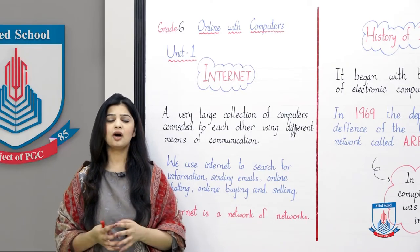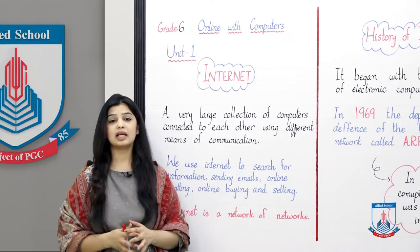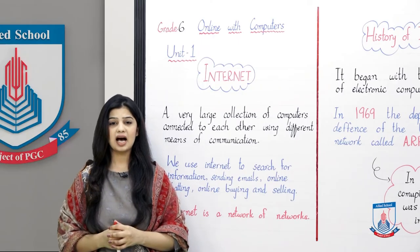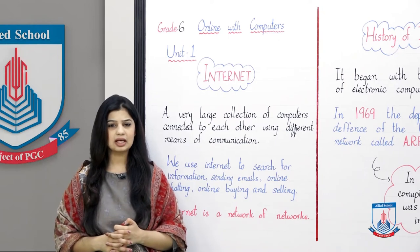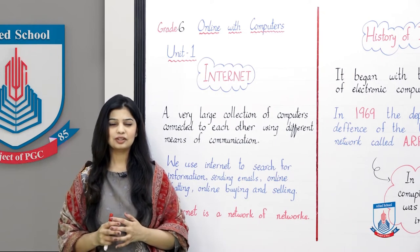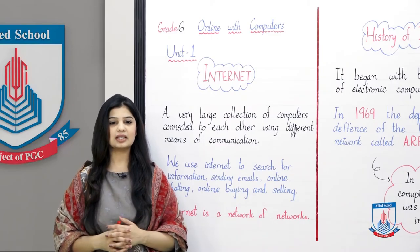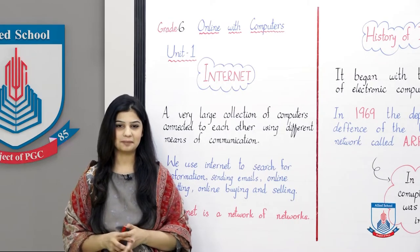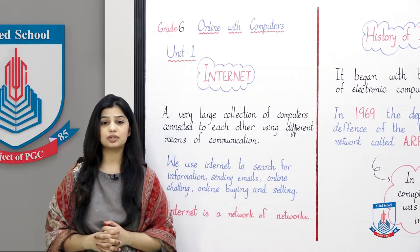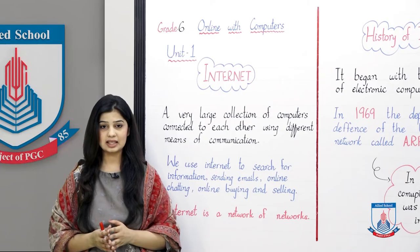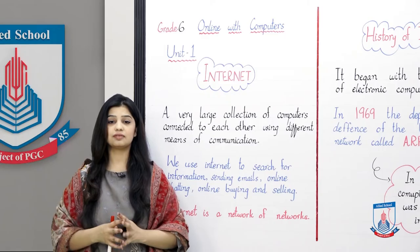WhatsApp is an online chatting application. We can also do online buying and selling — you or your parents may have ordered things online that are delivered to your home. The internet is a network of networks. We have studied in Grade 5 that there are different network types.